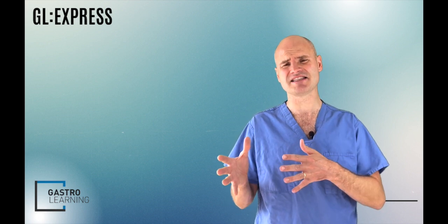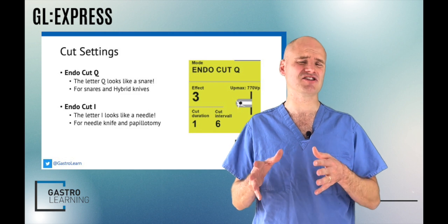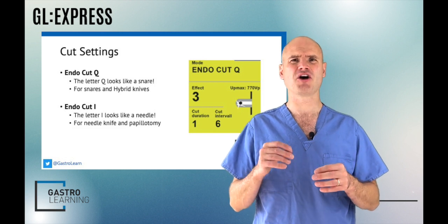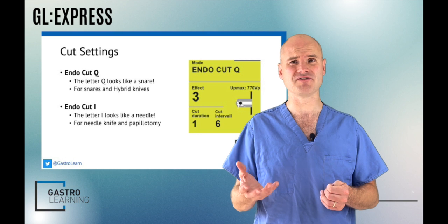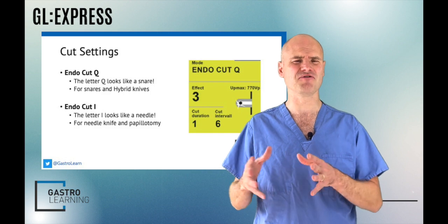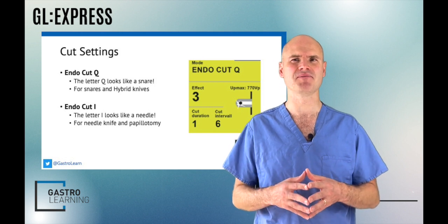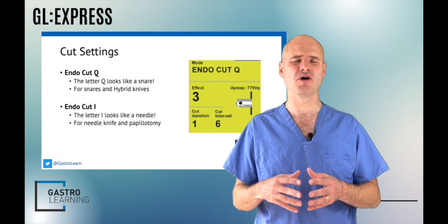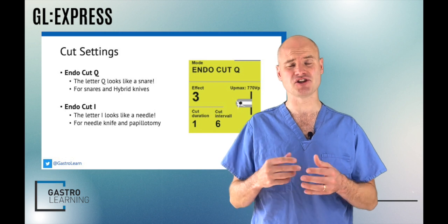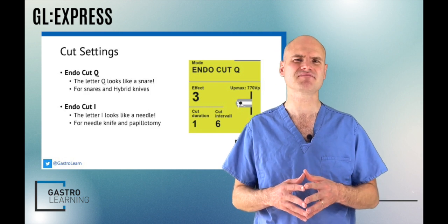The first thing you have to select is the mode, and this is selecting between Endocut Q and Endocut I. Endocut Q is designed for cutting over large surface areas, in other words when you have a snare. We also use it for some ESD work with hybrid knives. The letter Q looks like a snare so it's easy to remember. Endocut I is used for needle knife work and papillotomy. We can also use it for small needle-like ESD knives such as a dual J knife. The letter I looks like a needle so it's easy to remember.